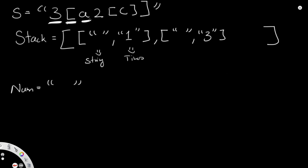Next we have the letter 'A'. When we encounter a letter, we add it to the string portion of the last element on the stack. So we add 'A' to the empty string in the top stack element. This means 'A' is going to get repeated three times, which makes sense. But we still need to consider the 2[c] part, so let's keep going.